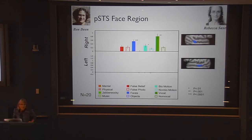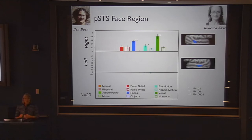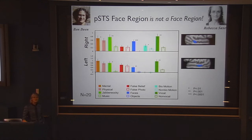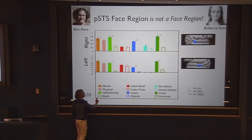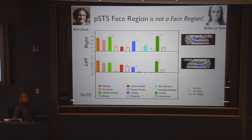Here's a surprise: this region responds just as much to human voices as it does to faces. This is embarrassing and revealing and kind of fun all at once. Lots of people, including me, have published papers talking about this as the 'STS face region' because we tested many conditions and it responded more to faces than anything else. It turns out it's not a face region at all — it responds at least as much to voices. And you can see the same region produces a strong response to all conditions that have voices in them, whether speech or non-speech vocalizations.